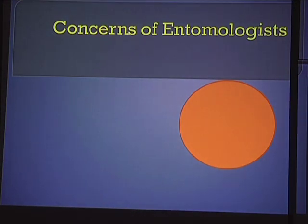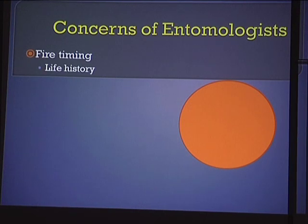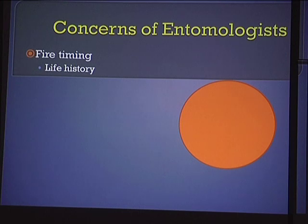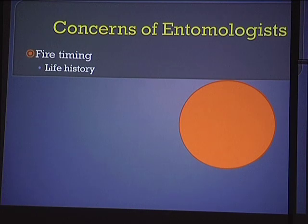Here are some of the concerns specifically of entomologists. The first one is fire timing, which touches on life history. Any group of organisms always has a time frame that's very sensitive for them. For example, if you burn in the dormant season and insects have laid their eggs on dead stems from the previous year's vegetation, you burn those and the eggs are gone. Whereas if you go with an active season burn, you may interrupt their life cycle — even if they can escape the fire, you may interrupt their reproduction.